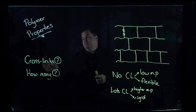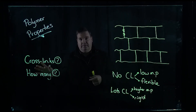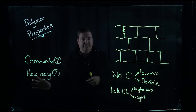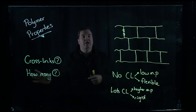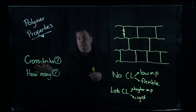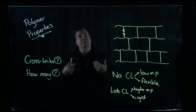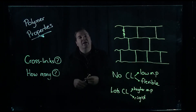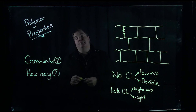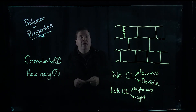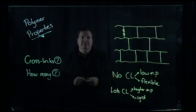The number of cross links is really important — if there are more cross links, it generally means a higher melting point and it becomes more rigid. And that's basically what influences the properties of a polymer. Hope this has been helpful. If you've got any questions, just ask, and I'll see you in the next video. Thanks guys.